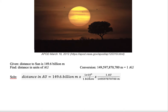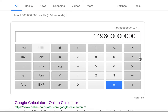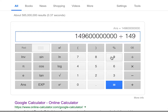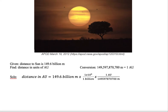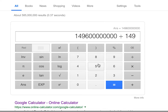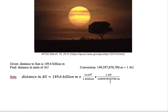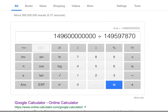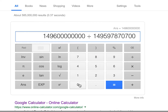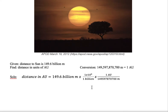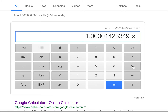So now my billion is gone and I'm left with meters. I need to divide by 149,597,870,700 meters to get my answer in AU. So I divide by that number — 149,597,870,700 — and then multiply by 1.